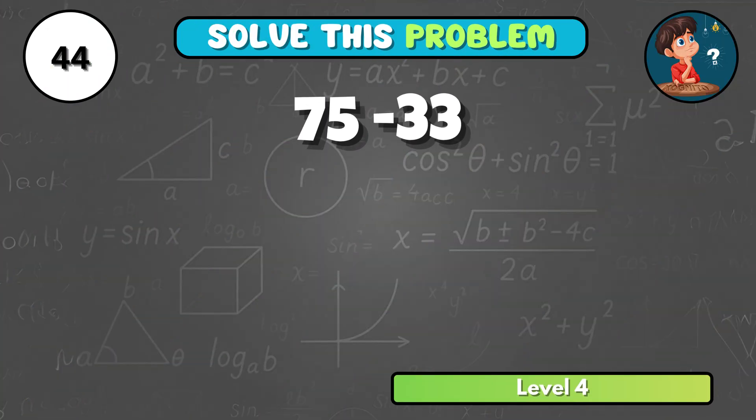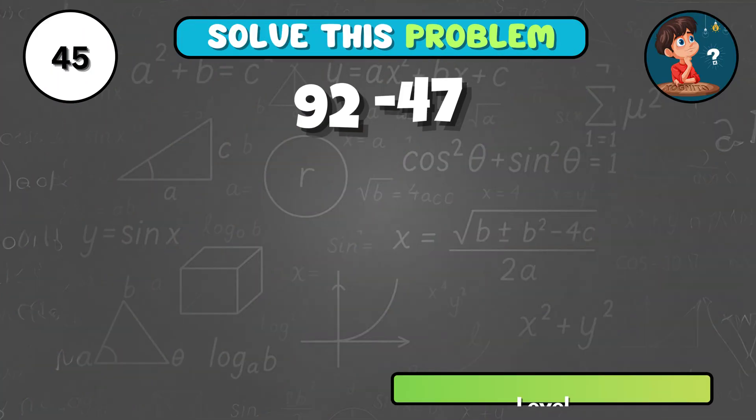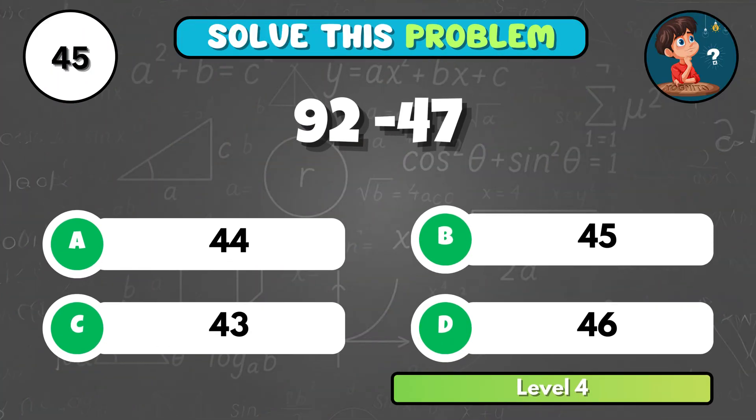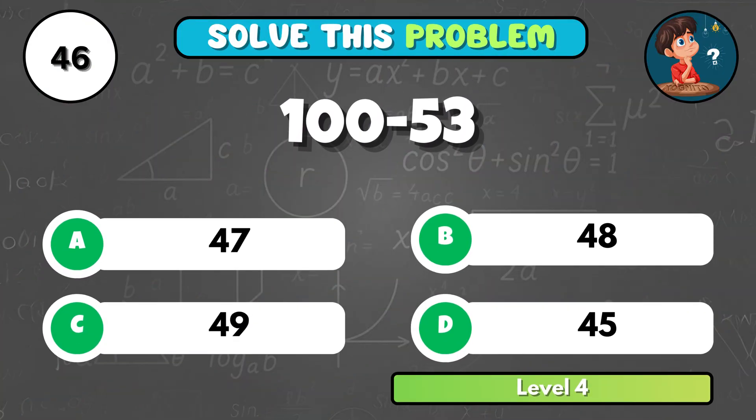Here's another tough one! 75 minus 33 equals what? It equals A, 42! Almost there, 92 minus 47 equals what? That's B, 45! Ready for a tricky one? 100 minus 53 gives you what? It comes to A, 47!